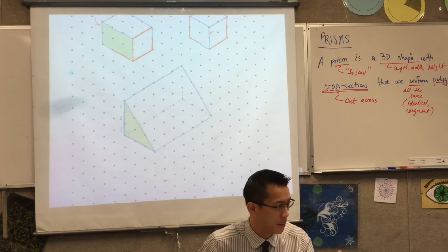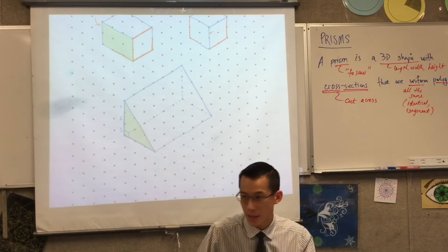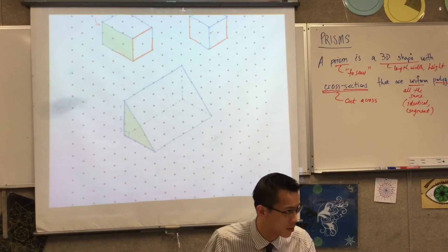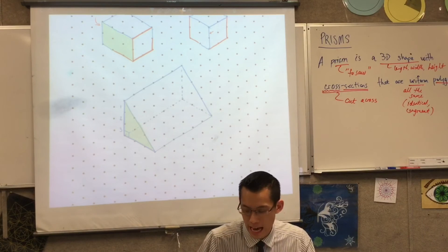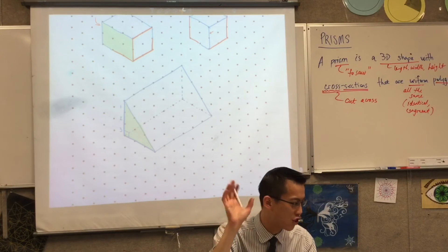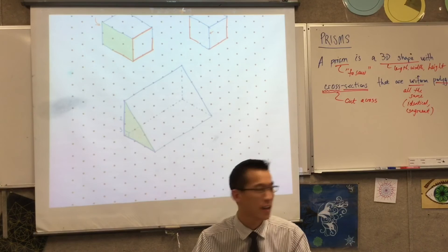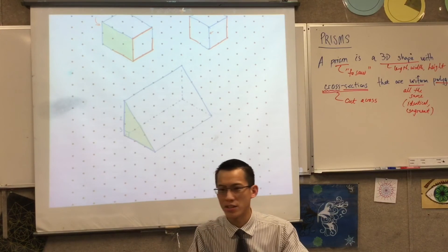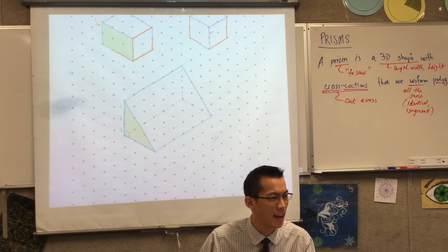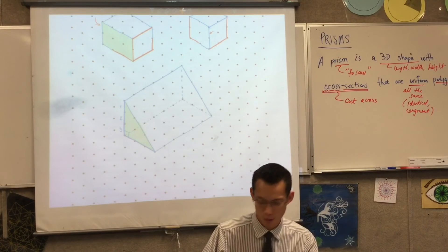Can you just look up for a minute? Because I've seen some people draw some shapes. Some of them are prisms and some haven't. Could you just put your pencil down for a second and look up? I'm looking for more eyes.